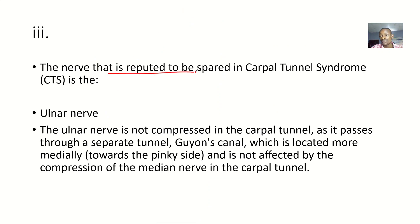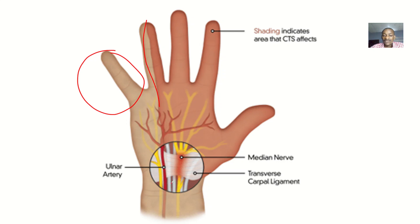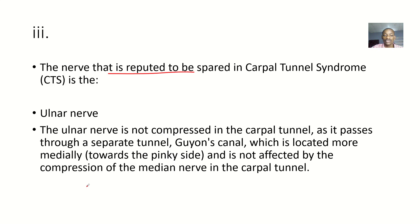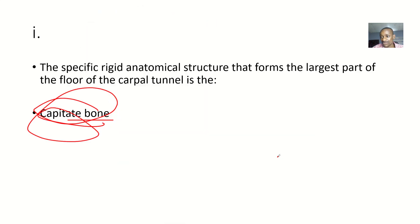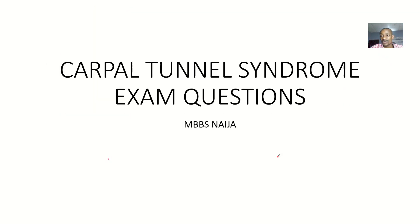For the third question — which nerve is spared — the ulnar nerve is passing through a different canal, so the ulnar nerve is spared. It is not compressed in carpal tunnel syndrome because it passes through a separate tunnel called Guyon's canal, located more medially towards the pinky side, and is not affected by compression of the median nerve in the carpal tunnel. That's it — we broke everything down and answered the carpal tunnel syndrome examination questions.